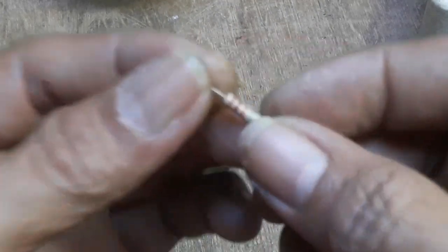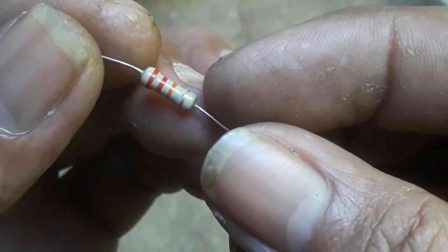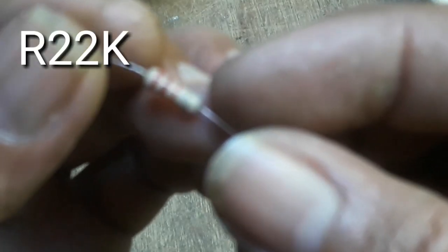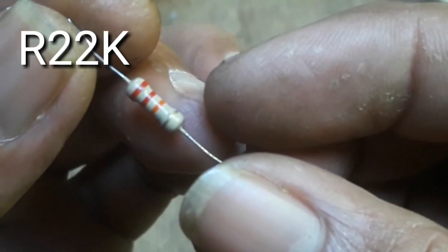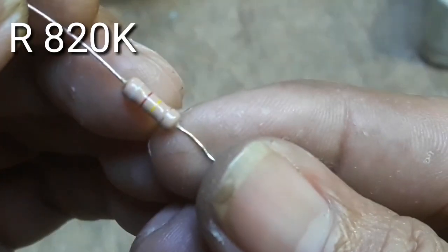Satu, siapkan resistor dengan ukuran 22 kilo ohm. Sedangkan yang kedua, siapkan resistor 820 ohm. Ini modelnya.